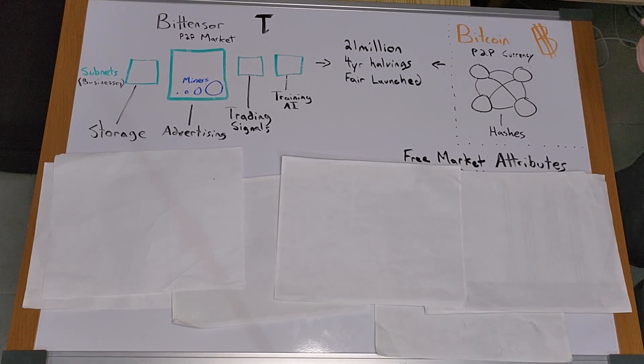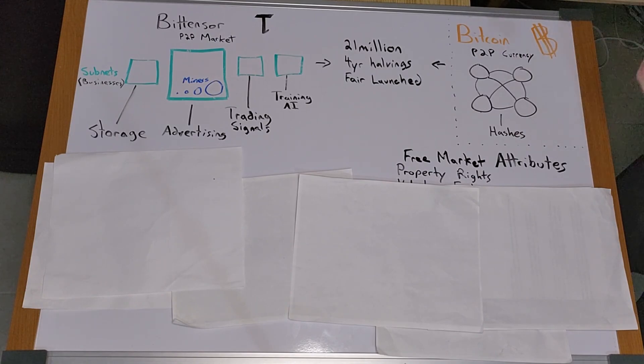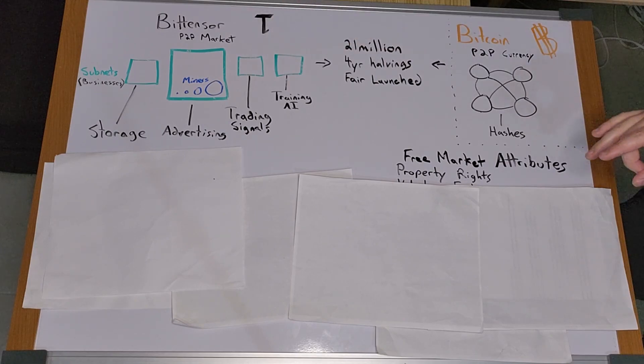I listed some of the attributes that comprise a free market, so let's quickly go over them. Property rights. This is a given for most cryptocurrencies. Individuals and businesses have the right to own and control their BitTensor tau, however they wish.